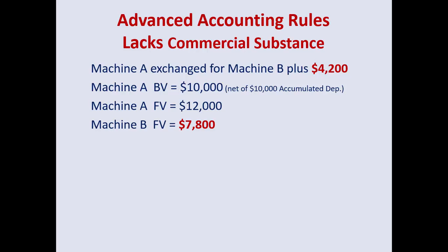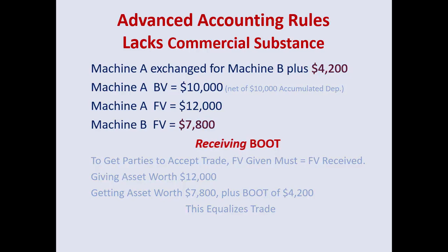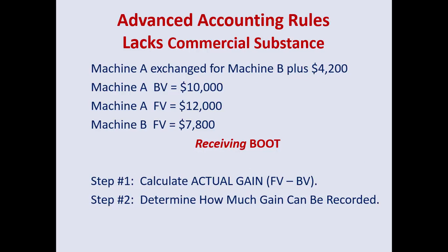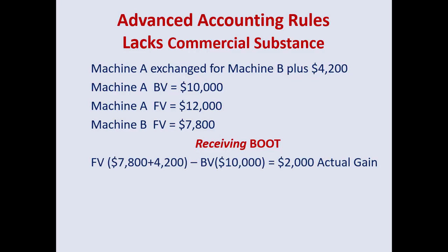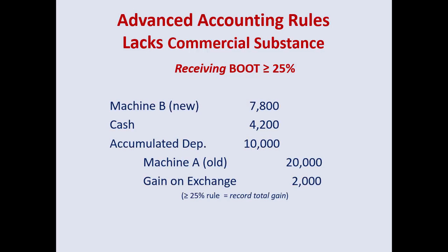Now a different example: the machine you're trading for has a fair value of only $7,800. To equalize the trade, you receive even more boot, because you're giving up an asset worth $12,000 and want a total of $12,000 in exchange. The $2,000 gain has not changed. Calculate the percentage: $4,200 cash divided by $12,000 equals 35%. According to the full commercial substance rules, since 35% is greater than or equal to 25%, you get to record the entire $2,000 gain, and Machine B goes on the books at its full fair value.